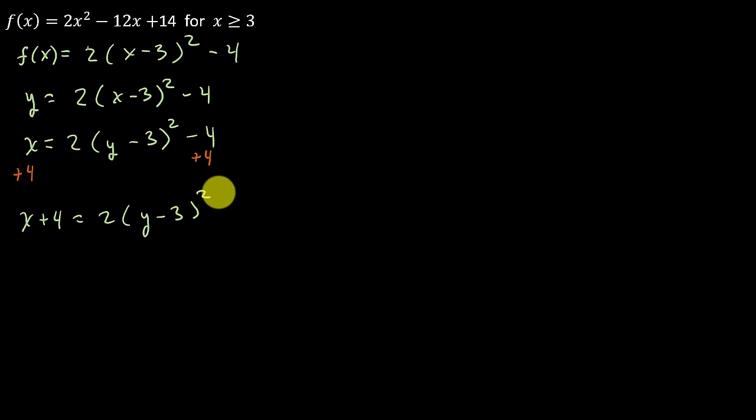Okay, so that is going to give me x plus 4 equals 2 times y minus 3 squared. And then I'm going to divide both sides or divide everything by 2. So that's going to give me one-half x plus 2 equals y minus 3 squared.